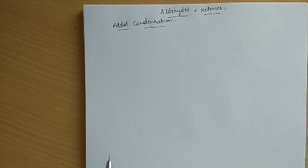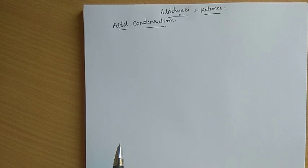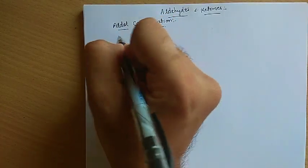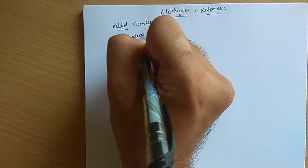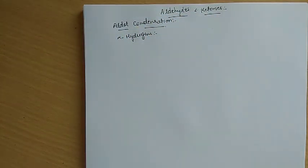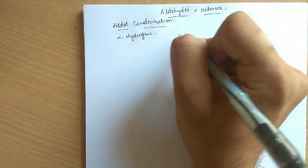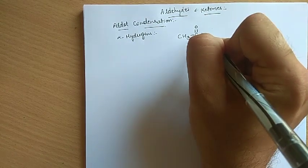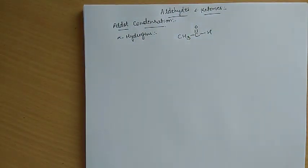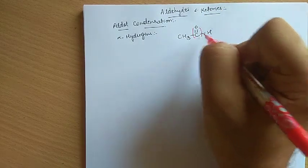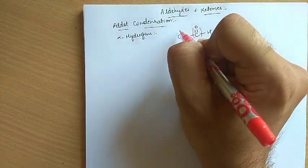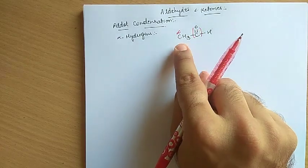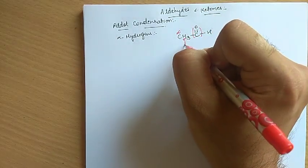Hello students. In this video we will look at two reactions of aldehydes and ketones which are extremely important: one is aldol condensation and the second one is called the Cannizzaro reaction. Before we start with these reactions, we need to understand something called alpha hydrogens. Let's take the compound acetaldehyde, CH3CHO. The carbonyl group C=O carbon atom attached is called the alpha carbon, and the hydrogens on this alpha carbon are called alpha hydrogens.